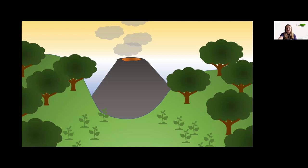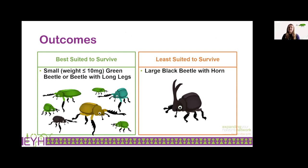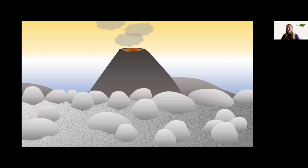Starting with the northern side — this side is still very green and lush. Does anybody have any ideas what beetles would do well here? The green and blue beetles are going to be pretty happy on this nice green portion of the island. Beetles with long legs — because there are still trees around — as well as green and blue beetles would all do well here. One that wouldn't do well is a really large black beetle with a horn, because they're a bit clumsy. Next up is Megan to take us through the rockslide portion of the island.